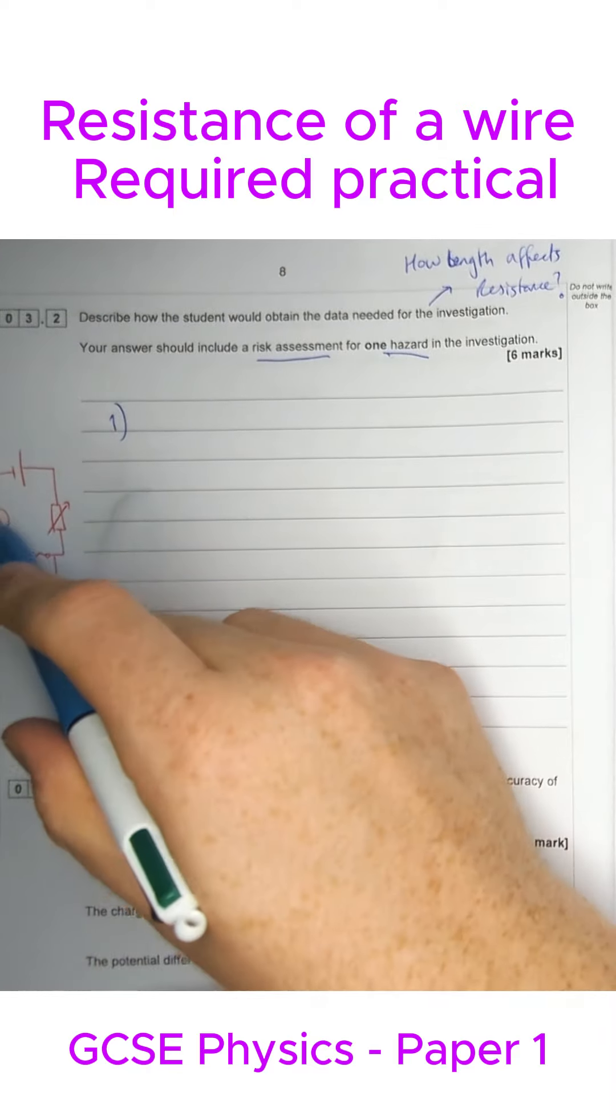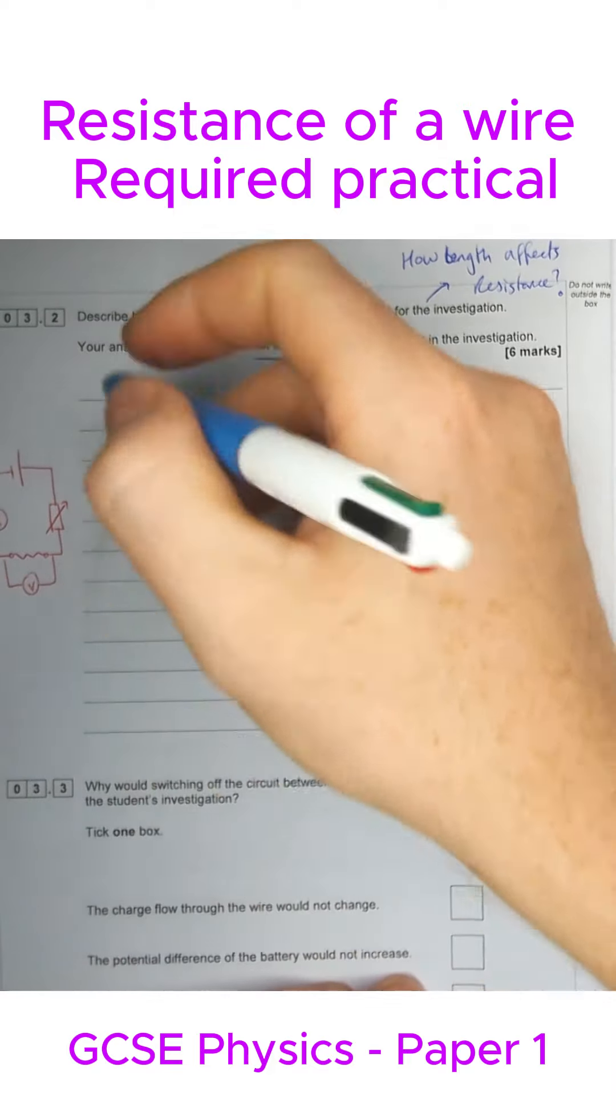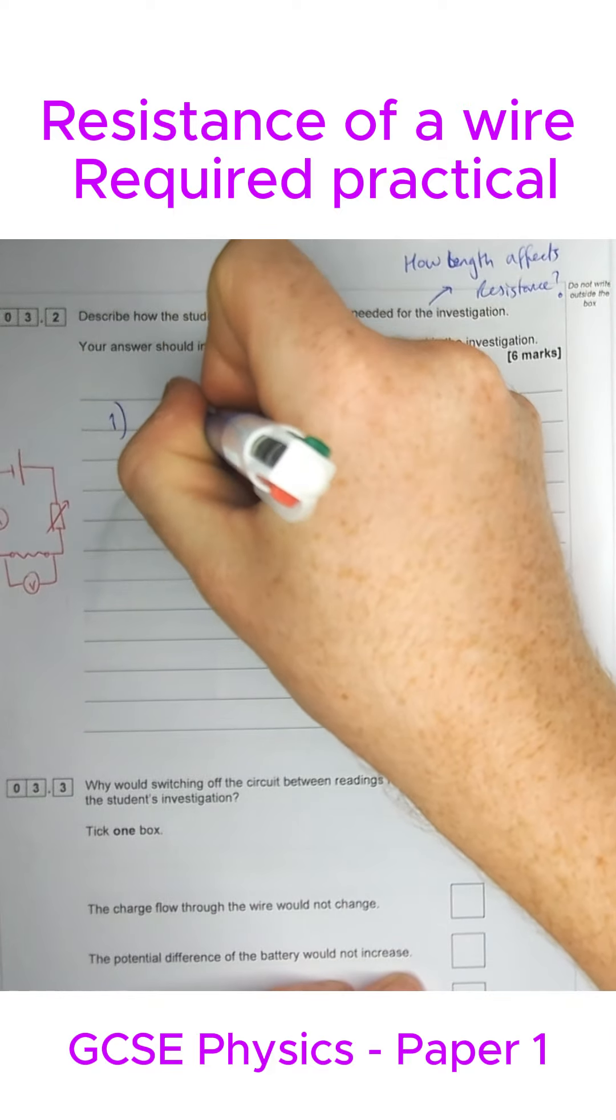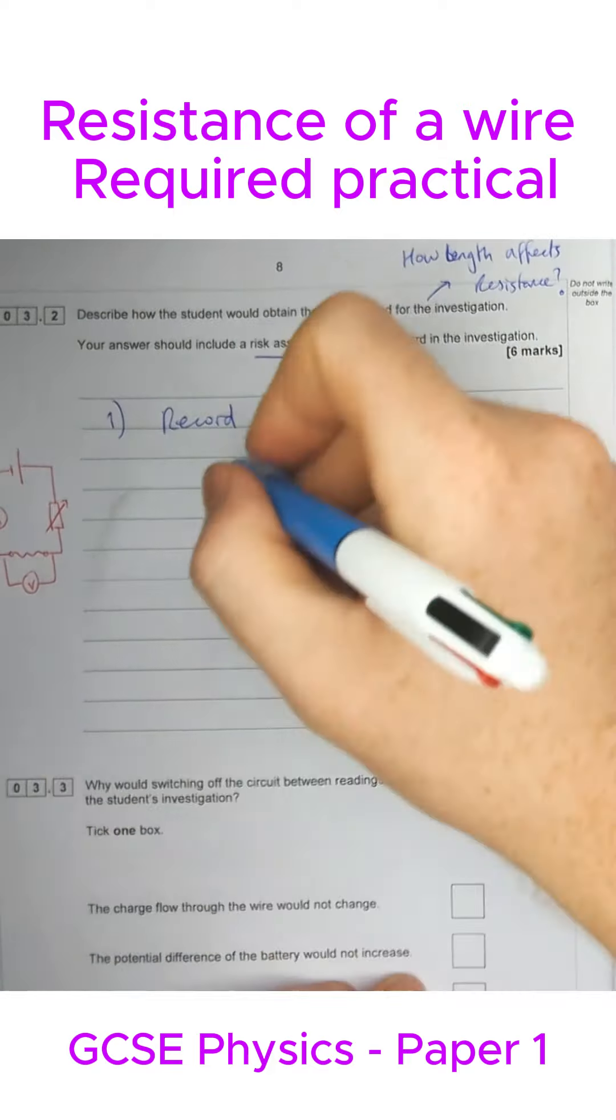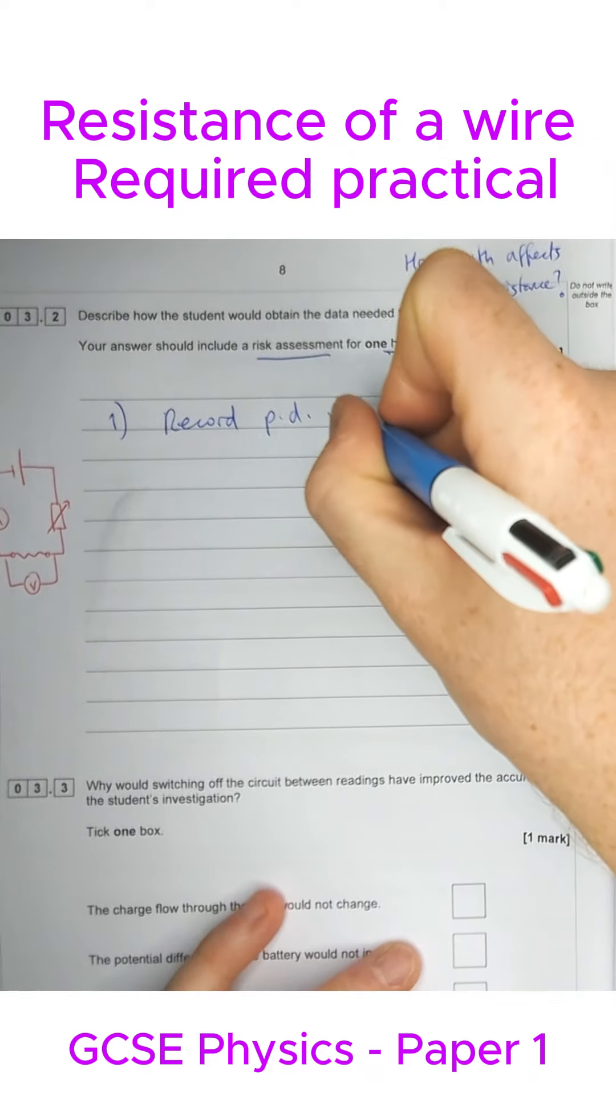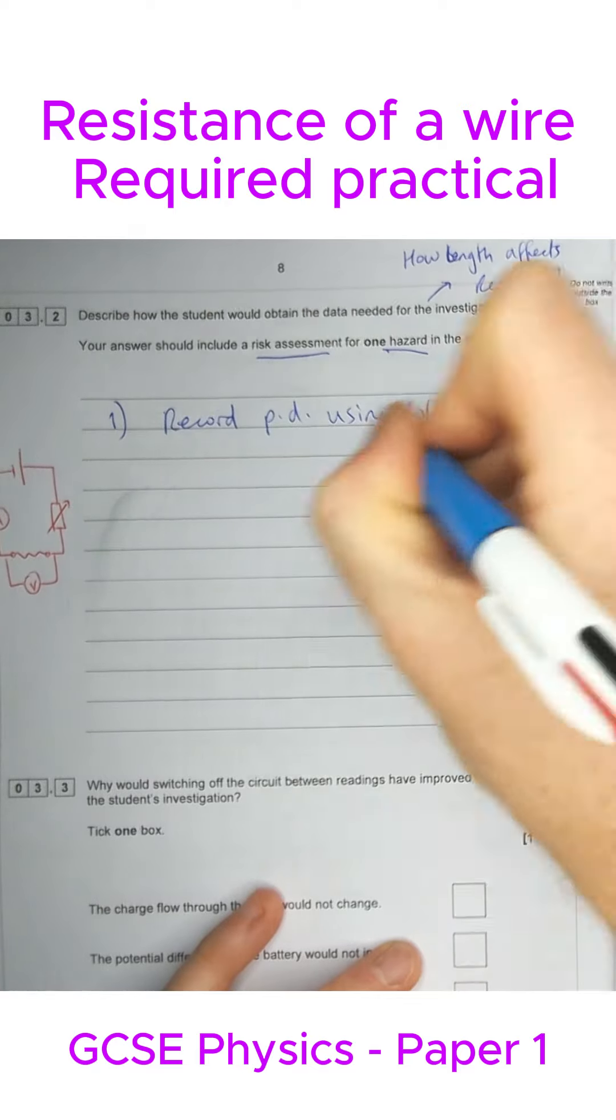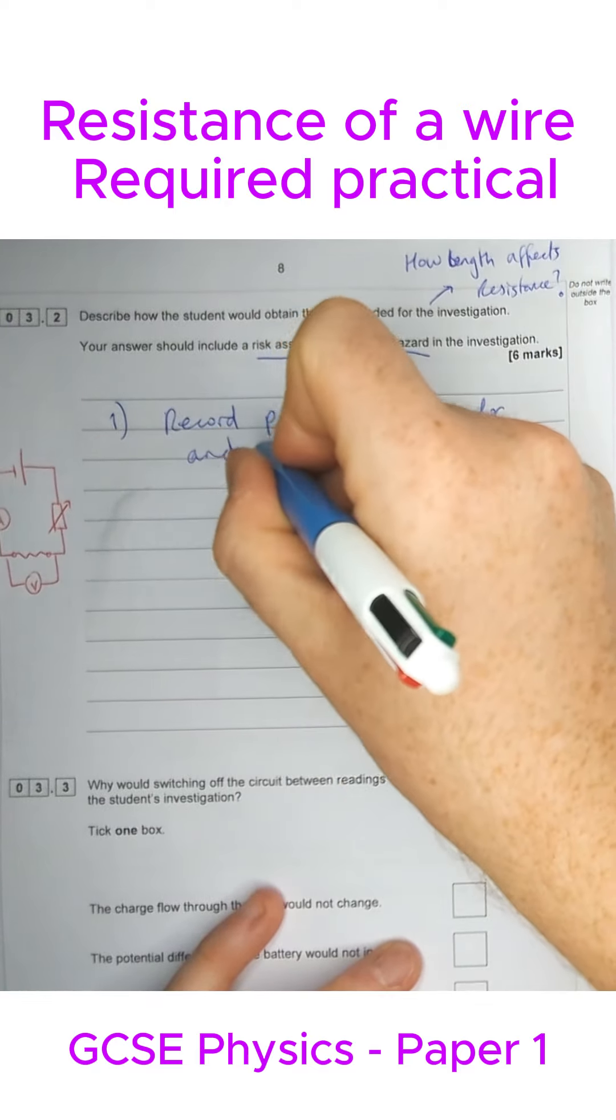So first of all, what are we going to use these pieces of equipment for? V is a voltmeter, A is an ammeter. We're going to record using the voltmeter and ammeter, the voltage or PD and the current. So record the PD using the voltmeter and the current using the ammeter.